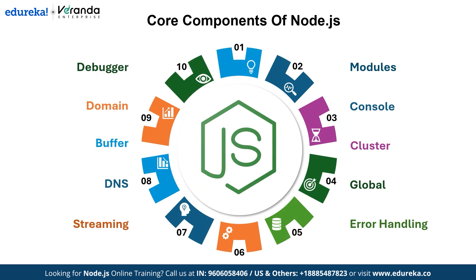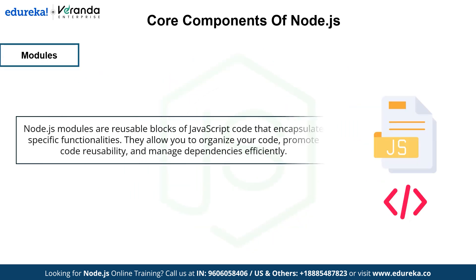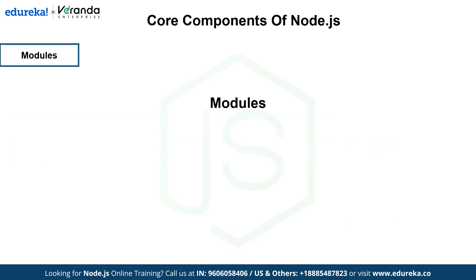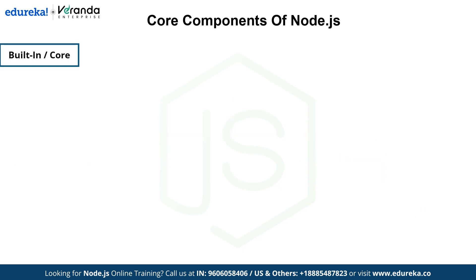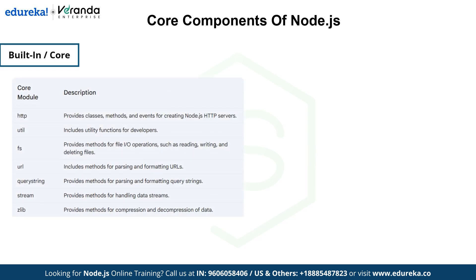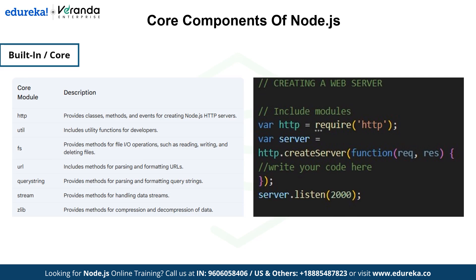Let's start with modules. Node.js modules are reusable blocks of JavaScript code that help structure applications by breaking them into smaller, manageable pieces. They promote organization, code reusability, and efficient dependency management. Node.js modules are categorized into two types: core modules, also known as built-in modules, and user-defined modules created by developers for custom functionality. Core modules include http, util, fs, url, query string, stream, and zlib. You can import built-in modules using the require function, which is the built-in function for handling CommonJS modules.